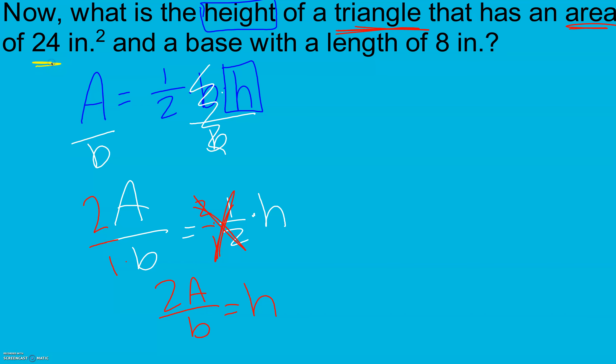We know the area is 24 and our base has a length of 8. So 2 times 24 divided by 8 equals h. We multiply in our numerator first. Remember this is a grouping symbol. It's like there's parentheses there.